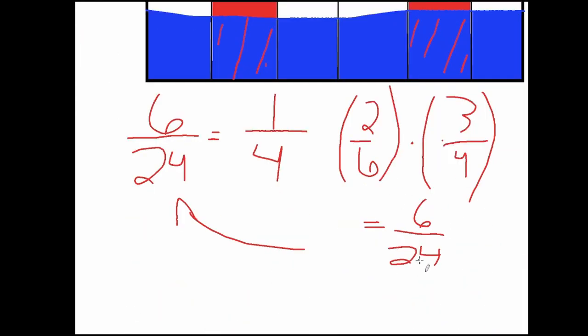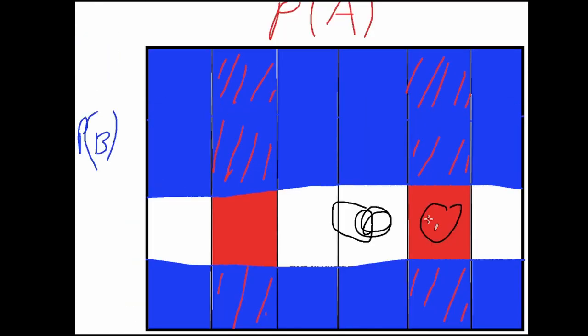But the numerator is a little bit more tricky. The numerator showcases how each of these red boxes intersects with the blue boxes. Notice that we can mathematically showcase this by knowing that each blue column will intersect with each red column exactly one time.